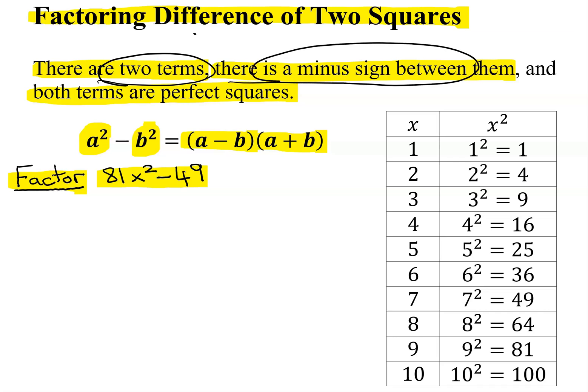There has to be a minus sign between them. Again, true in this case. And both terms have to be perfect squares. So what I've written over here is a table on the right of the most common numbers we use in these problems.